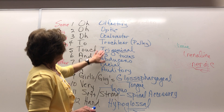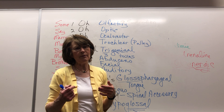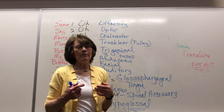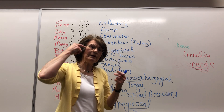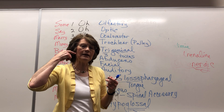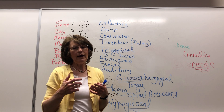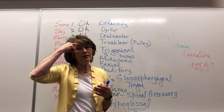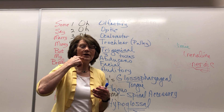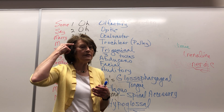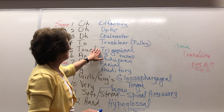Trigeminal: use a Q-tip or finger to test three parts of their face — can you feel this, can you feel this, can you feel this — done bilaterally, because there's a branch of the nerve at each of the three locations. So you've got to test all three parts to check the trigeminal.